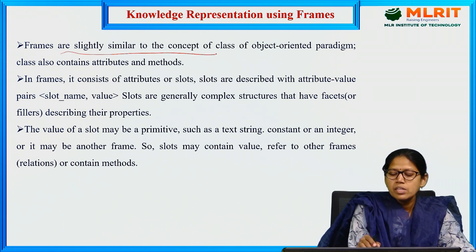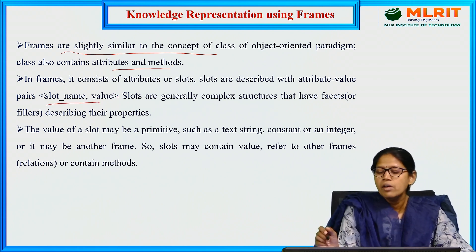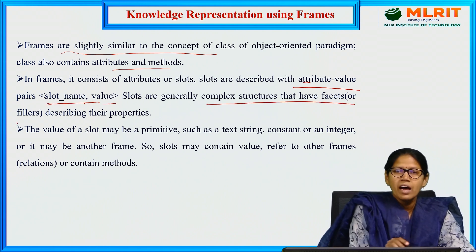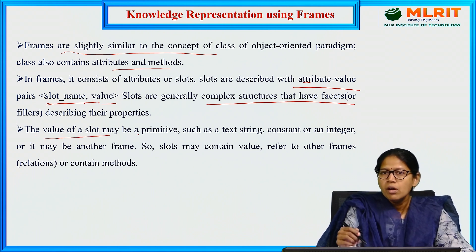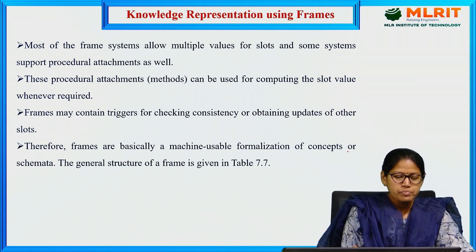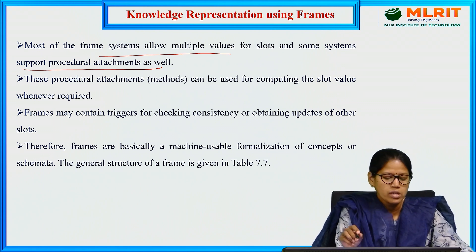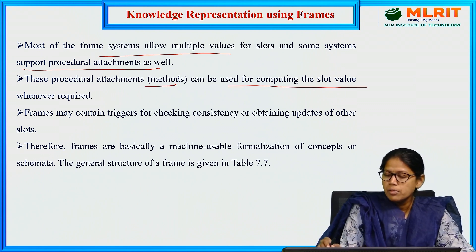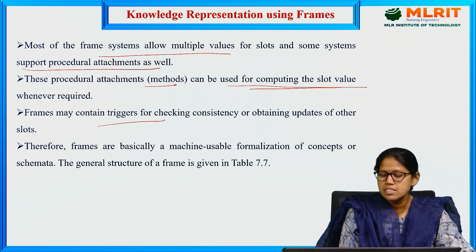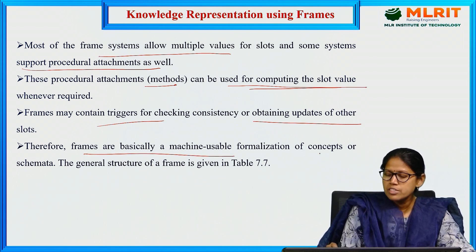Frames are slightly similar to the concept of classes. A class contains attributes and methods; similarly, a frame contains slot name and value — attribute-value pairs. Complex structures have facets as fillers. The value of a slot may be a primitive, string, constant, or integer, and a slot may also refer to other frames. Most frame systems allow multiple values for slots, and some support procedural attachment — methods used for computing the slot value when required. Frames may also contain triggers for checking consistency or obtaining updates of other slots.